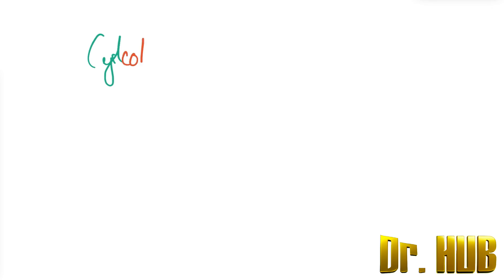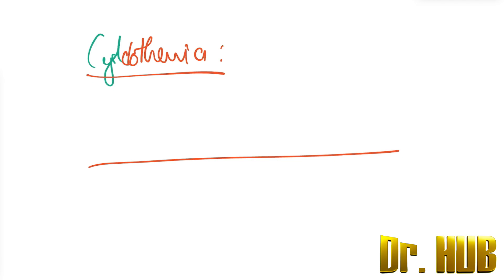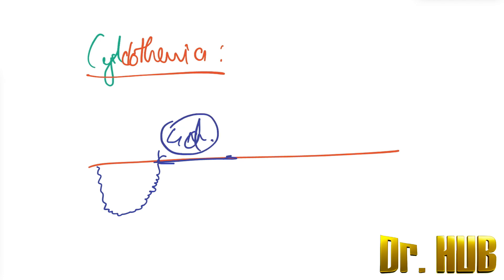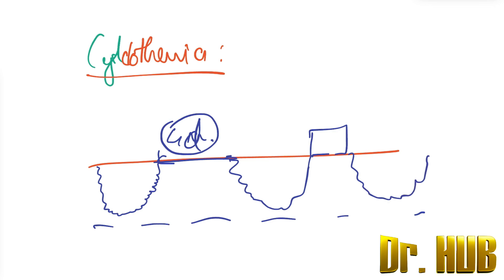Next we look at cyclothymia. In cyclothymia, there is a threshold for mania, euthymia, and a threshold for depression. The mood starts in the area between the thresholds, then dips for four days or more, followed by a normal period, then dips again — but it does not cross the full threshold for depression. Then again there is a period of normality, followed by another increase and another depressive episode above the threshold for depression.